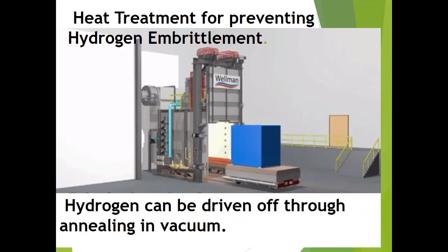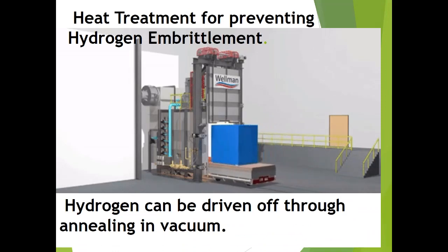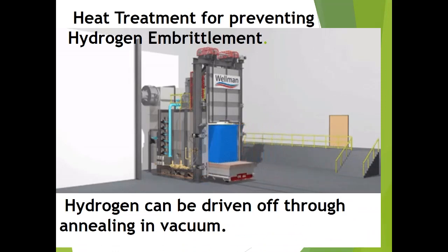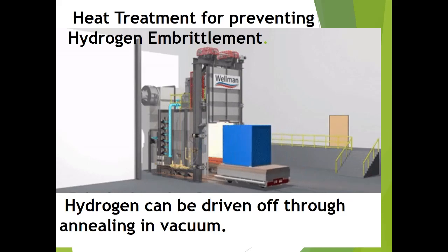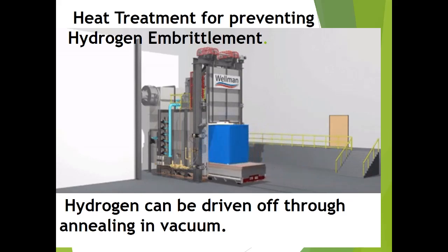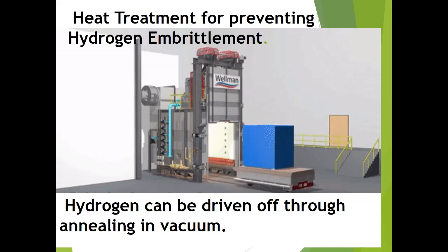There is one solution for prevention of hydrogen embrittlement: heat treatment. For preventing hydrogen embrittlement, hydrogen can be driven off through annealing in vacuum.